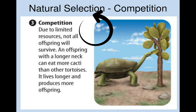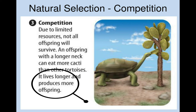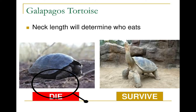The organisms that survive will go on to reproduce, and therefore they will pass their strong, favorable, desirable characteristics to their offspring. The next generation will therefore have a higher proportion of individuals with these favorable characteristics.